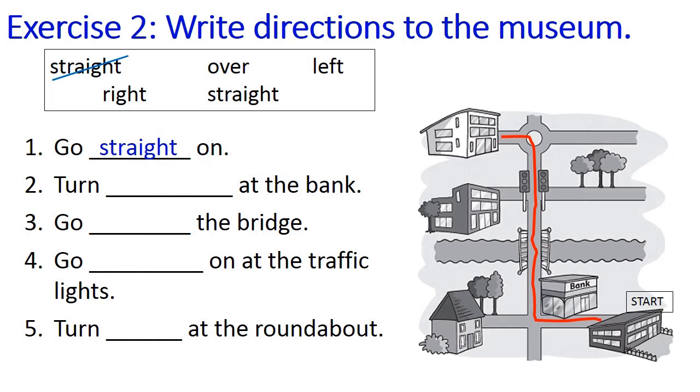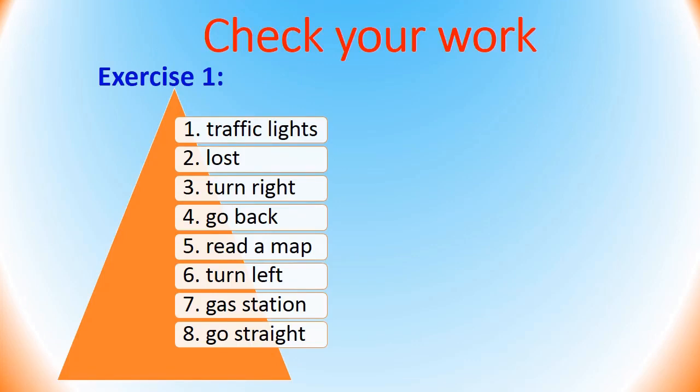Okay, have you finished your paper? Let's look and check your work. One: traffic lights. Two: lost. Three: turn right. Four: go back. Five: read a map. Six: turn back. Seven: gas station. Eight: go straight. Well done! Big hand for you.